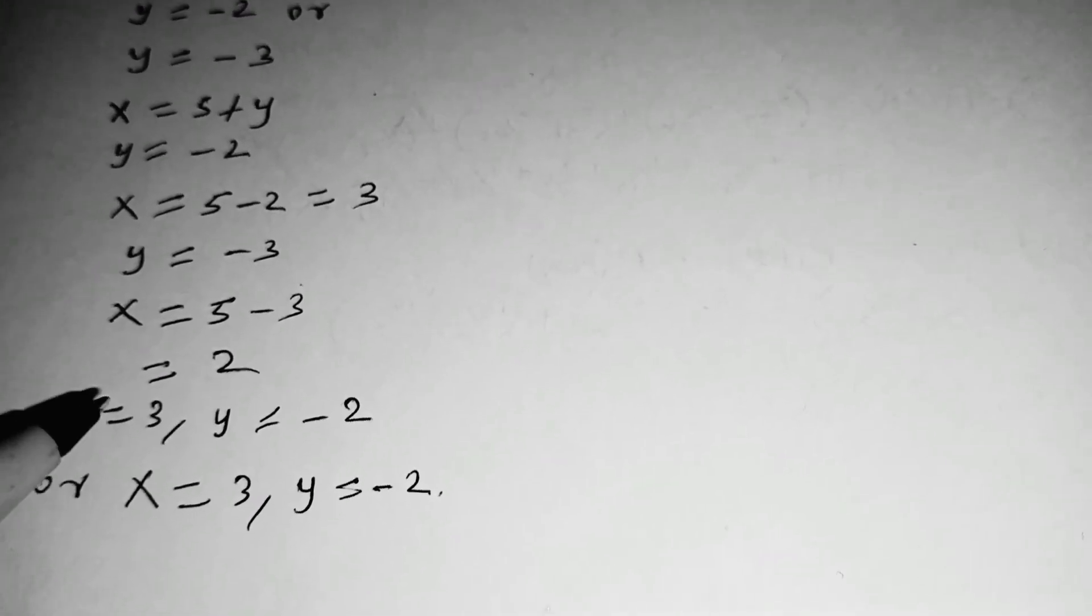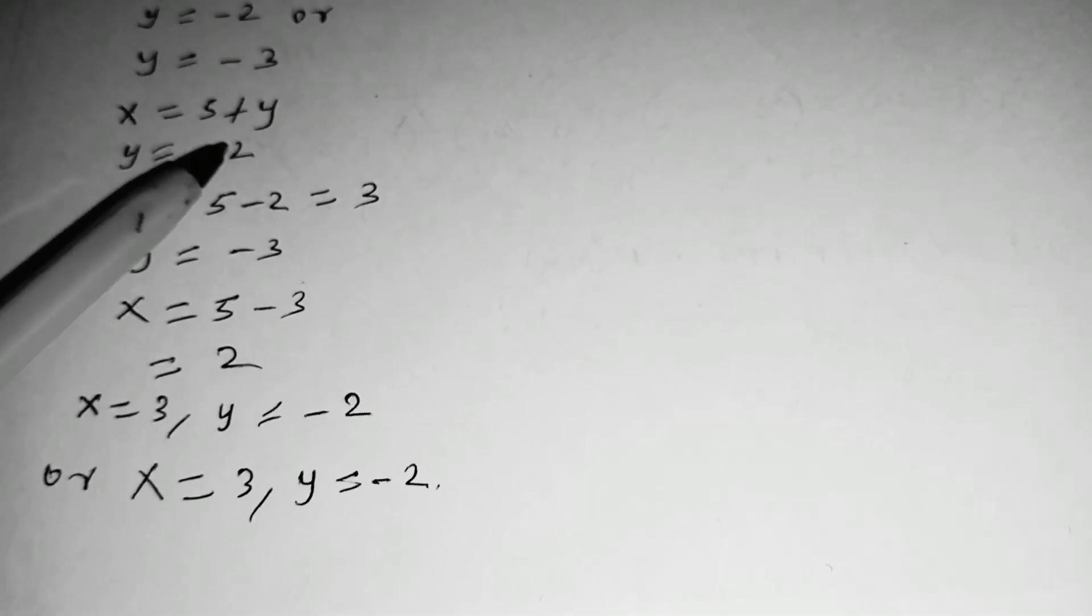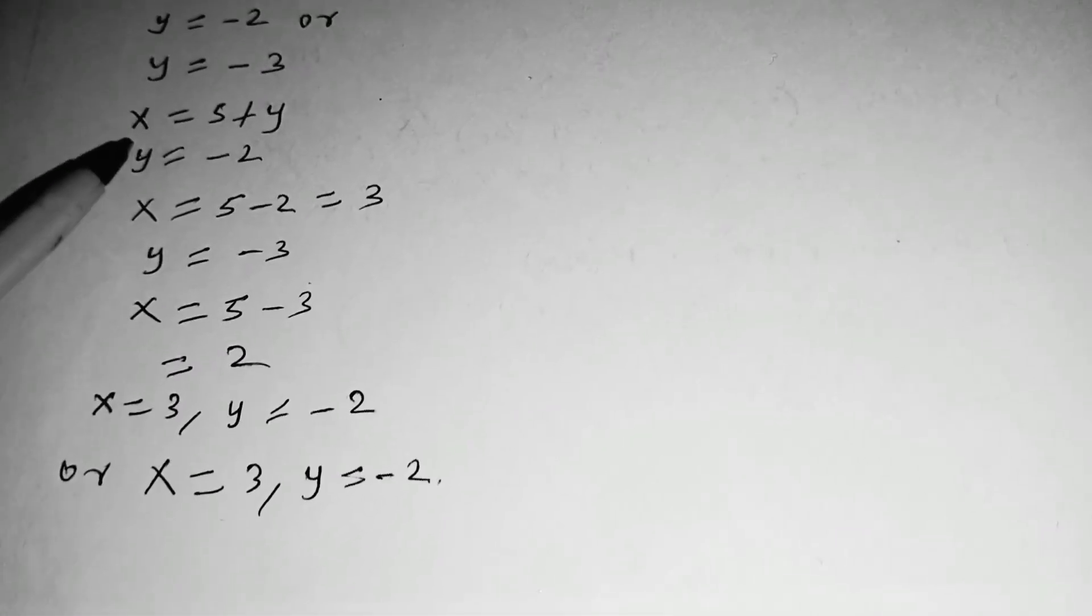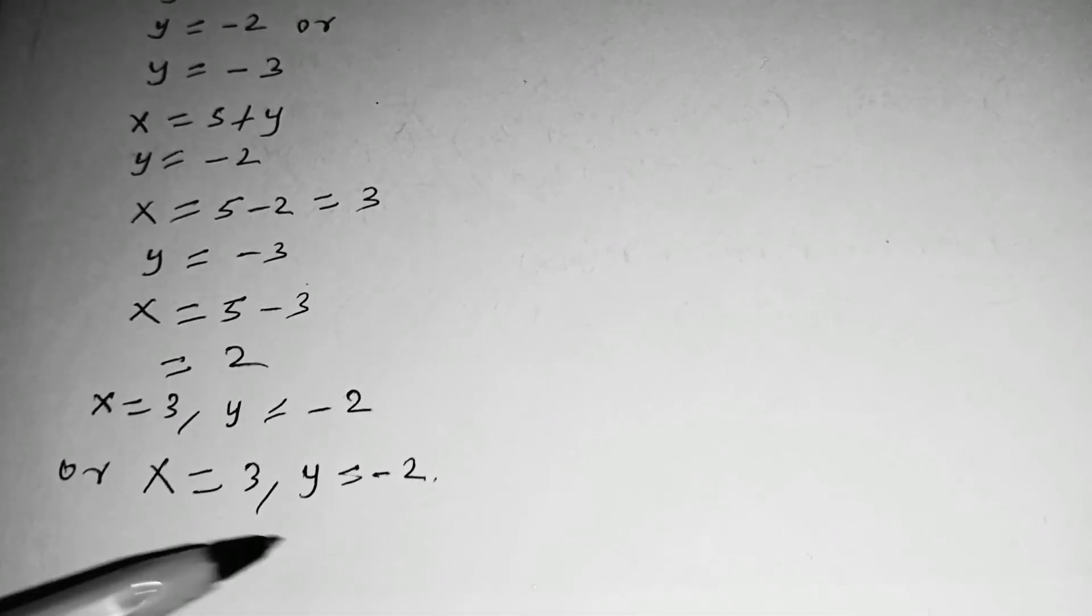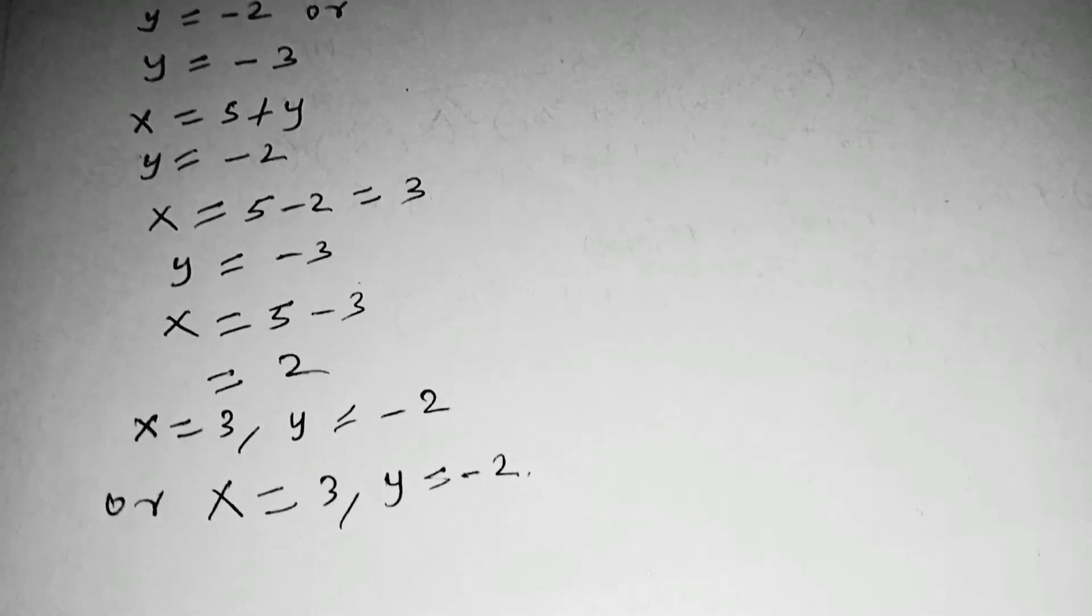And of course, if you check here, you can clearly see that when x is equal to 3, 3 is equal to 5 minus 2, which is 3. When x is equal to 2, 2 is equal to 5 minus 3, which is 2. So those are our results in that simple equation.